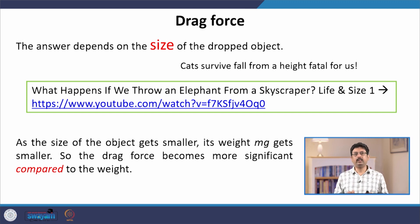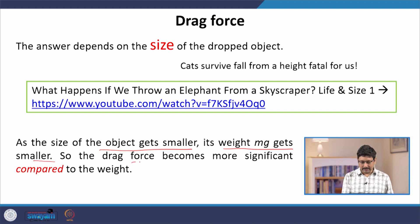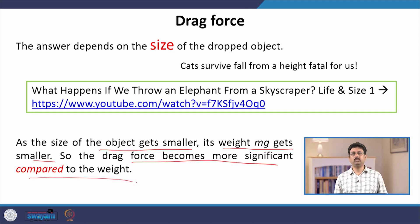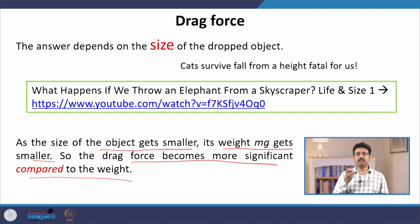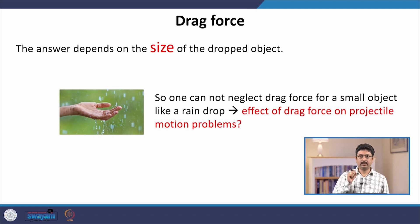The overall point is that as the size of the object gets smaller, its weight mg gets smaller. So the drag force becomes more significant compared to the weight. That is why whether drag is significant or not depends on whether this force is significant compared to the weight of the object. A crucial example where drag is really important is a small object such as a raindrop.